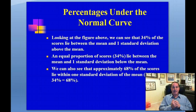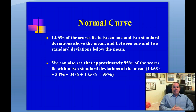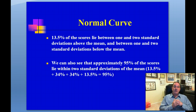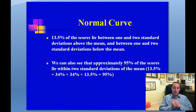34% plus 34% is 68%. You can also see that 13.5% of the scores lie between one and two standard deviations above the mean, and between one and two standard deviations below the mean. When you add up all those percentages — 13.5%, 34%, 34%, and 13.5% — you will see that 95% of all scores fall between two standard deviations below the mean and two standard deviations above the mean.